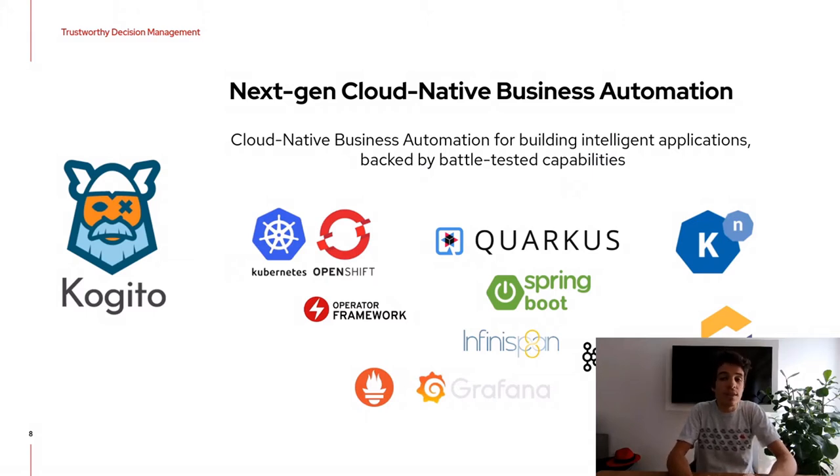A few years ago Red Hat started a new brand project called Cogito to build business automation microservices. Cogito is the next generation cloud native business automation solution provided by Red Hat, built on top of Quarkus and Spring Boot. Cogito is the runtime for your business models: BPMN, DMN, and DRL. It's super easy to use. You create a new Cogito project, which is a Java project, take your business models and put them inside, compile the project, and Cogito will generate the microservice for you. It is already integrated with all the top-notch technologies for microservices: Knative, Kubernetes, OpenShift, Kafka, Grafana, Prometheus for monitoring, and many others.